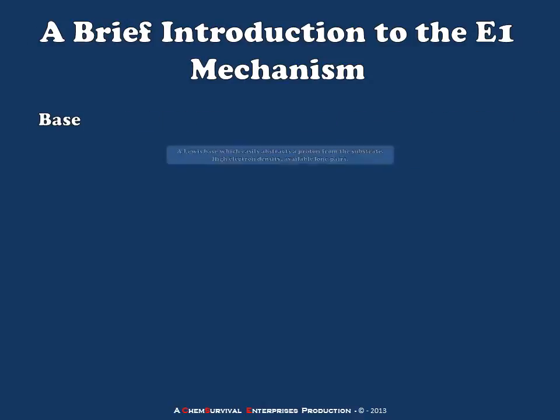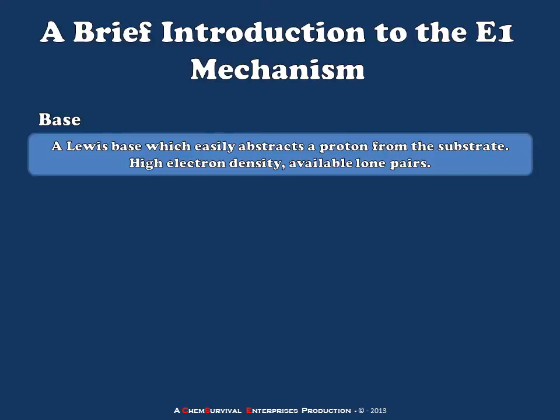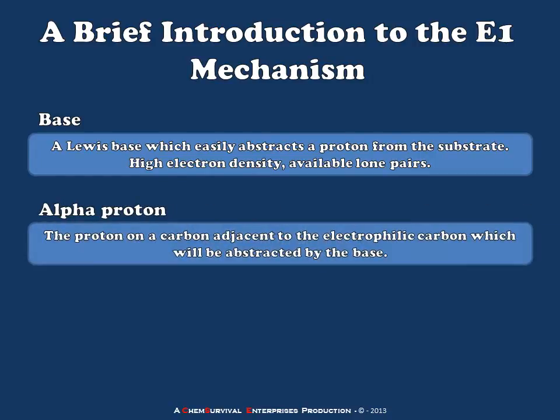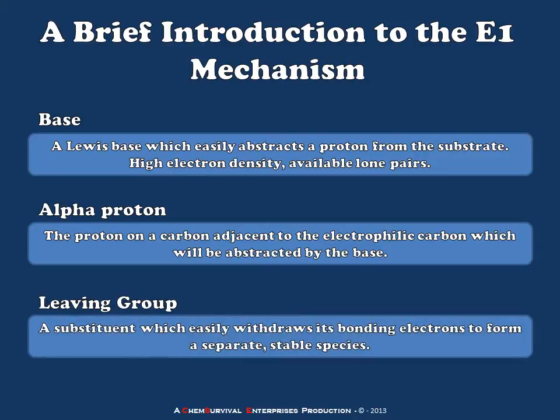So we're going to start with our definitions again — if you've seen these before feel free to fast forward. We're going to define a base as a Lewis base, that is a base which can donate electron pairs to form a chemical bond. When it does so to a proton, that's a Bronsted-Lowry base; when it does so to other things, we call it a nucleophile. The alpha proton is a proton attached to a carbon adjacent to the carbon of interest — in this case the electrophilic carbon of our substrate. And finally the leaving group: this would be the substituent which withdraws its bonding electrons from the substrate and moves off to form a separate species which is hopefully at least a little bit stable.